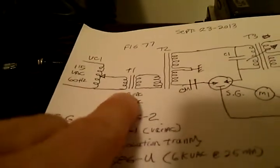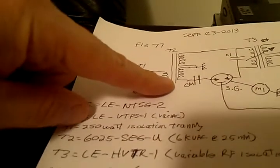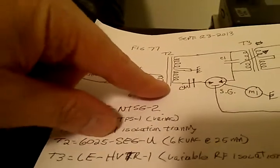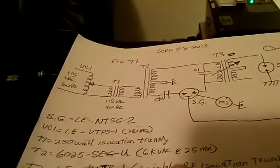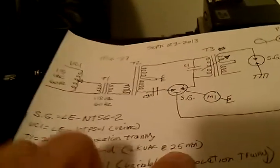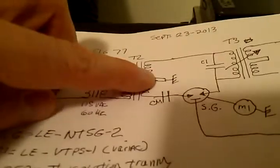We've got a variac over here. Isolation transformer here. Going to the neon transformer. It's the 6025-SEG-U. 6,000 volts at 25 milliamps. It's a transformer. Center tap goes to ground.